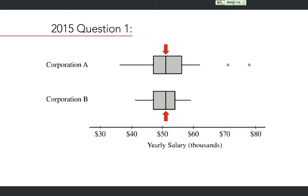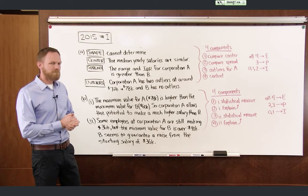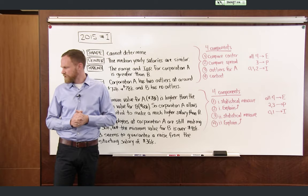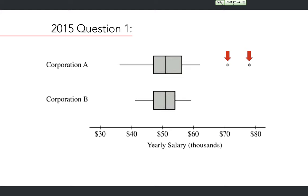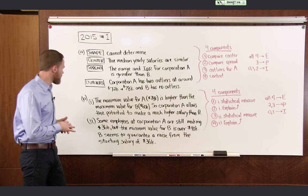The median value is very similar for both corporation A and corporation B. From the box plots, we can see the range as the maximum minus the minimum, and the IQR as the length of the box. In both cases, the range and IQR for corporation A is greater than for corporation B. Clearly from the box plot, corporation A has two outliers around $72,000 and $78,000, while B does not have any outliers.